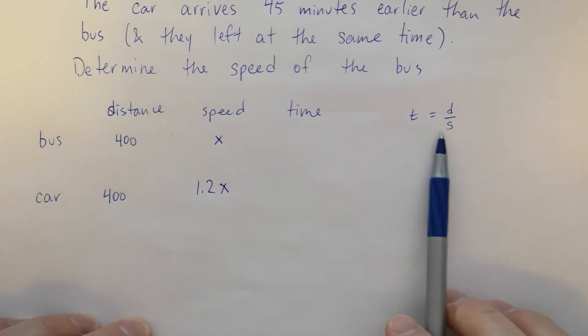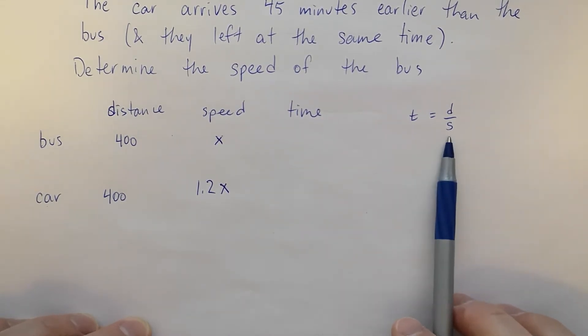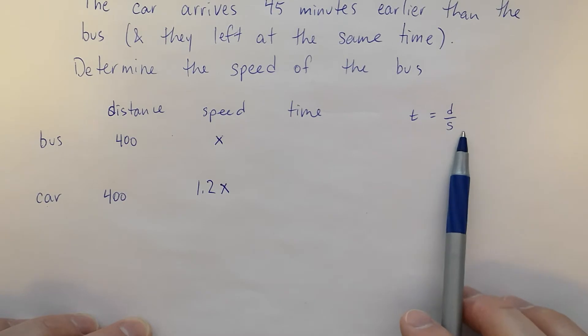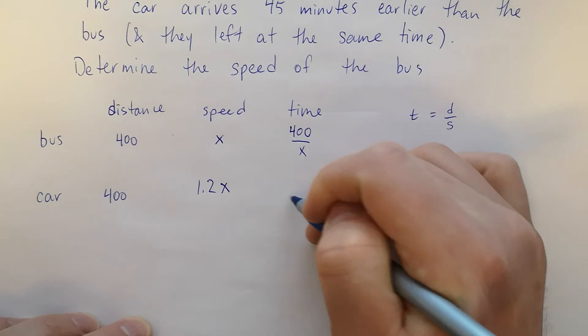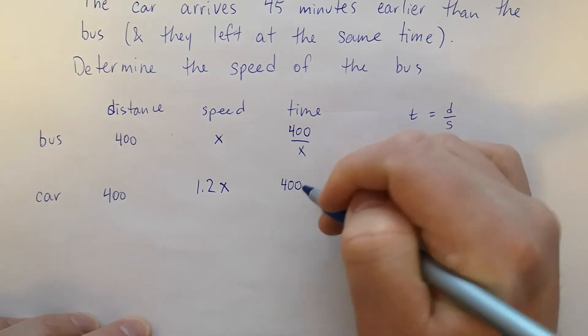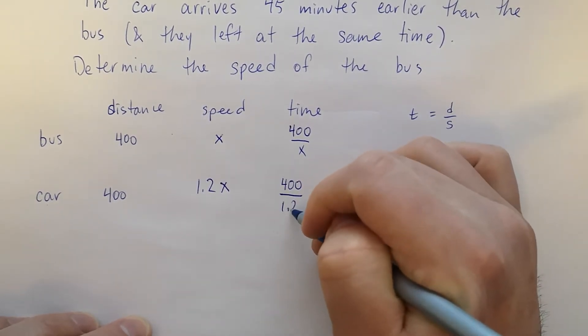Now the thing that you need to remember here is to calculate time, it's the distance traveled divided by the speed. So for the bus, that's going to be 400 over x. And for the car, that's going to be 400 over 1.2x.